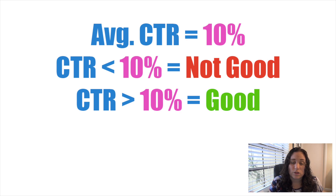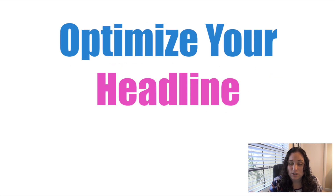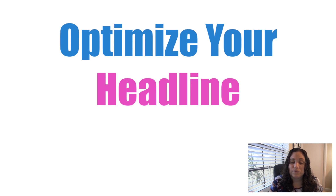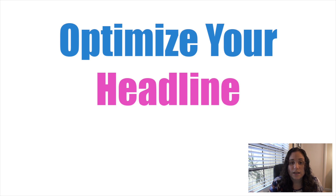If you have an ad performing at a 5% CTR, you want to look at why. Headlines are a huge factor in what causes someone to click through, so I would look at the higher-performing ads based on CTR and see what type of headlines and verbiage I'm using. Maybe there's something in that ad that can be tested within the ad that's performing poorly. I would make a copy of that particular ad, change the headline, run it for 30 days, and then come back and check if the CTR for the new ad is higher than the old one. If that's the case, you know it's your headline, and you can pause the old ad and run the new one.